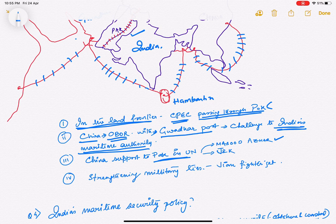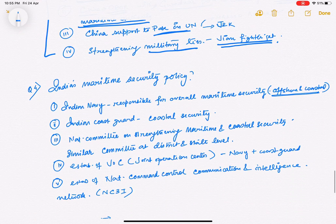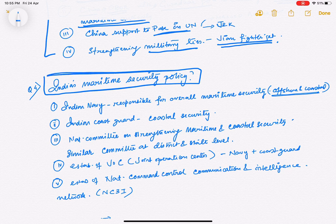Similarly, in the Jammu Kashmir case, China took up these things in the United Nations. Next, strengthening military ties, especially with China providing the Jian fighter jet. Hence, from all these points you can say that the external security of India is under threat with the China-Pakistan nexus. Next, India's maritime security policy or strategy—both are the same. This strategy got evolved after 26/11.